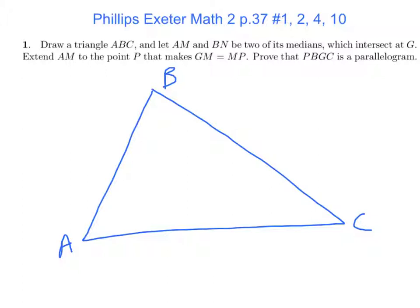Let AM and BN be two of its medians. So what's a median? It goes to the middle of the opposite side. So AM is a median, so M has got to be there, and AM is a median.